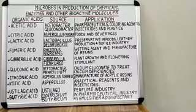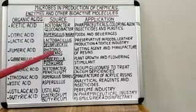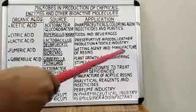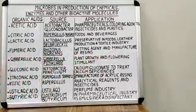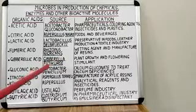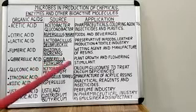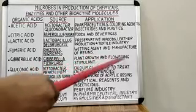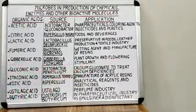Fumaric acid is obtained from Rhizopus nigricans, a fungus, and is used as a wetting agent and in the manufacture of resins. Gibberellic acid is obtained from a fungus and is used as a plant growth and flowering stimulant.